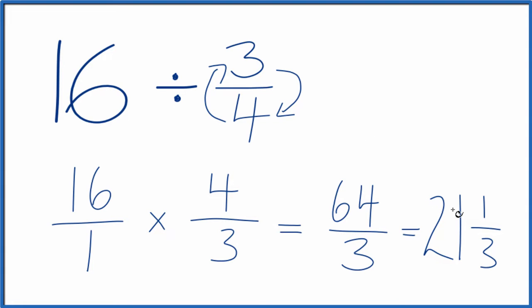And you could check that. 21 times 3 is 63 plus 1, 64 over 3, which is what we had here. So in answer to our question, 16 divided by 3 fourths, it's either 64 over 3 or 21 and 1 third.